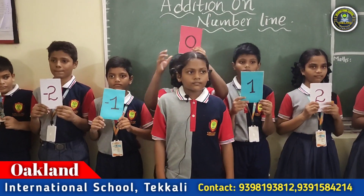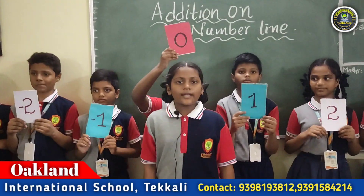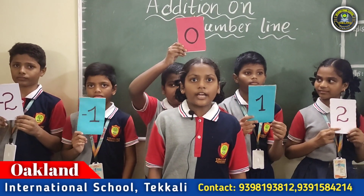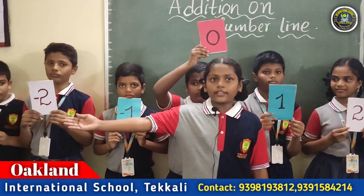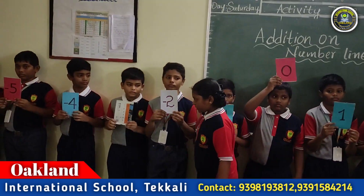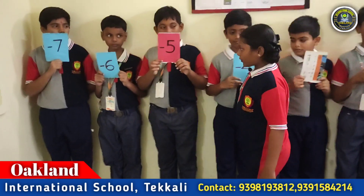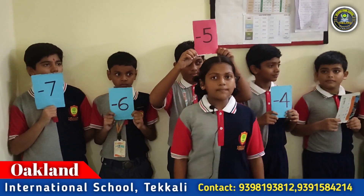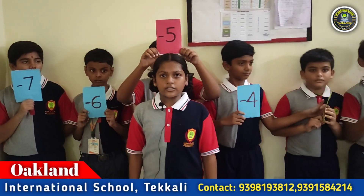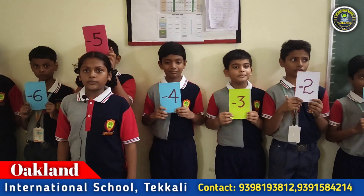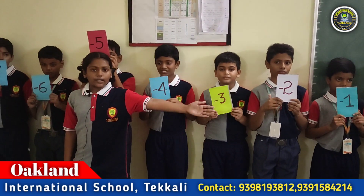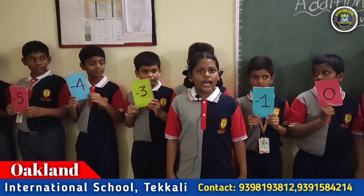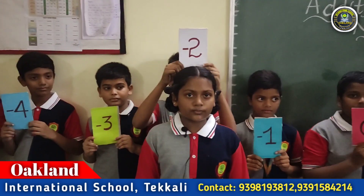Minus five plus three. Where I am standing, that is zero position. To reach minus five, we have to move five steps left side on the number line. One, two, three, four, five. Now I am reaching minus five. We should add plus three. Plus three is a positive integer, so we have to move three steps right side on the number line. One, two, three. So the answer is minus two. It is the correct answer.